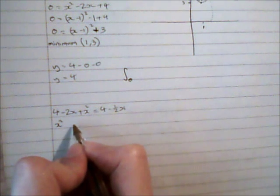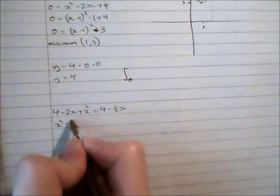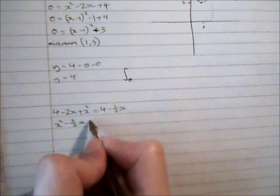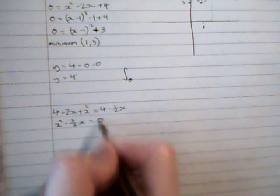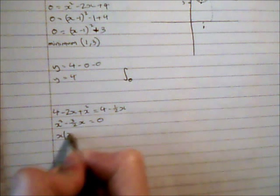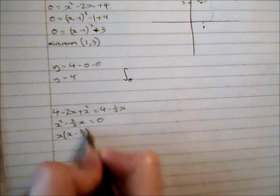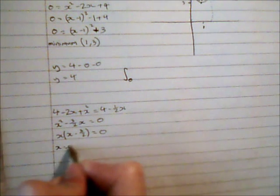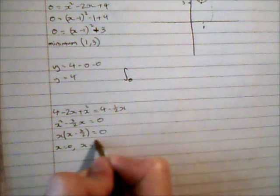So x squared minus 3 over 2x. And I'll subtract the 4 so that's just equal to zero. So x times x minus 3 over 2 equals zero. So x equals zero and x equals 3 over 2.